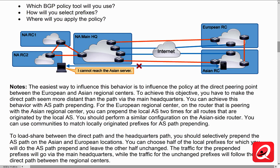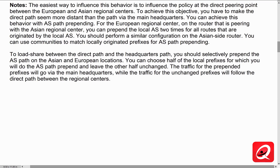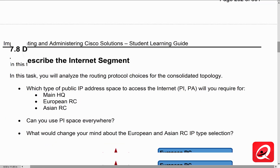We could choose half of the local prefixes on which we will do the AS path prepending and leave the other half unchanged. The traffic for the prepended prefixes will go through the main headquarters, while the traffic for the unchanged prefixes will go directly between the regional centers. BGP is a policy-based routing protocol, so it doesn't consider bandwidth or delay — it's going to do load sharing based on the policy that you implement. You would have to identify a percentage of the traffic. The 1 gig links are going to be able to support more traffic than the 100 meg link, so we'd have to evaluate that and decide how we're going to apply it.